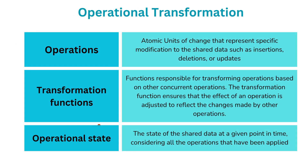Operational Transformation relies on three main components. Number one: operations — atomic units of change representing specific modifications to shared data, such as insertions, deletions, and updates. Number two: the transformation function — the core logic in application code that performs conflict resolution; it's not straightforward and requires complex functions to handle different edge cases. Number three: operation state — the state of data at a given point in time, considering all operations applied so far.